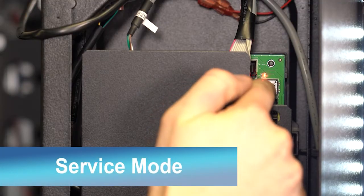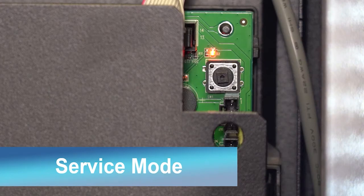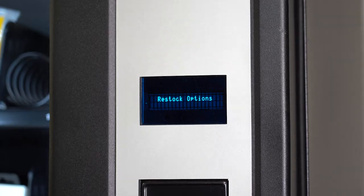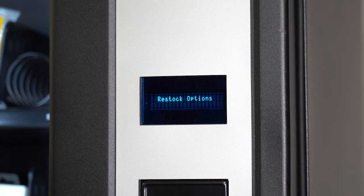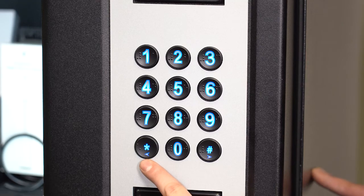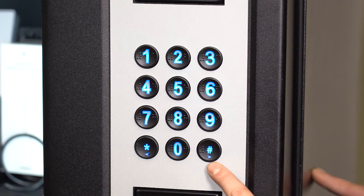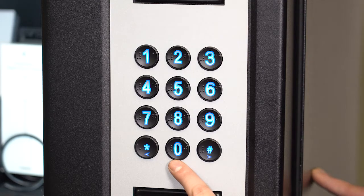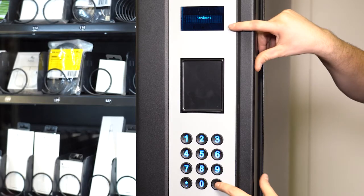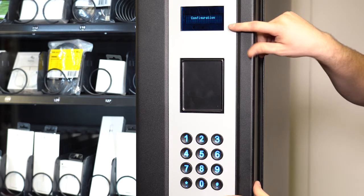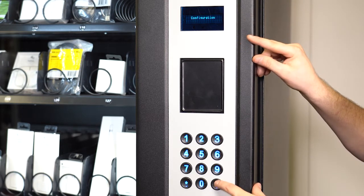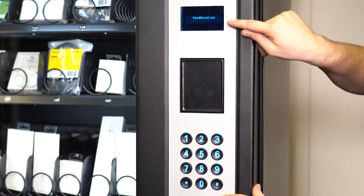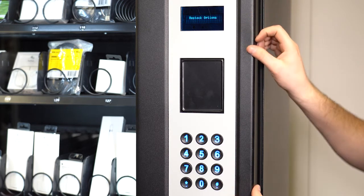The service mode button can be found inside the machine on the upper right portion of the control board. After pressing the service mode button, you will see restock options on the display. When scrolling through the service mode options, the star button is scroll left and the pound button is scroll right. Zero is enter and eight is back up. On the first set of options in service mode, you can select from hardware, configuration, Vennnovation, and restock options.